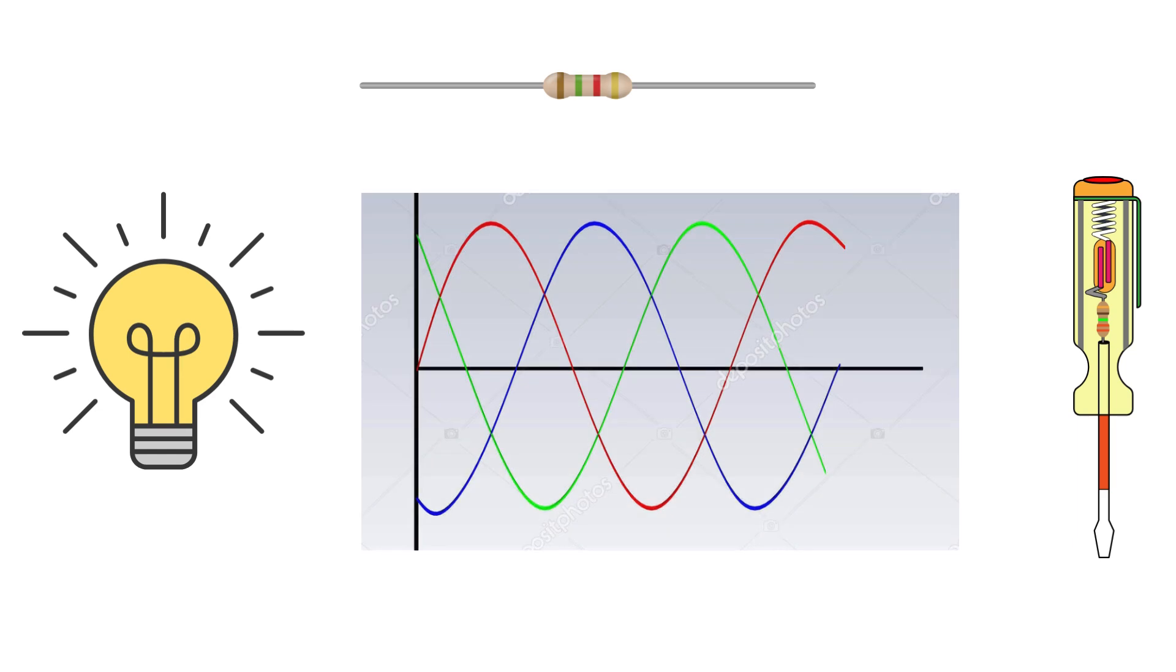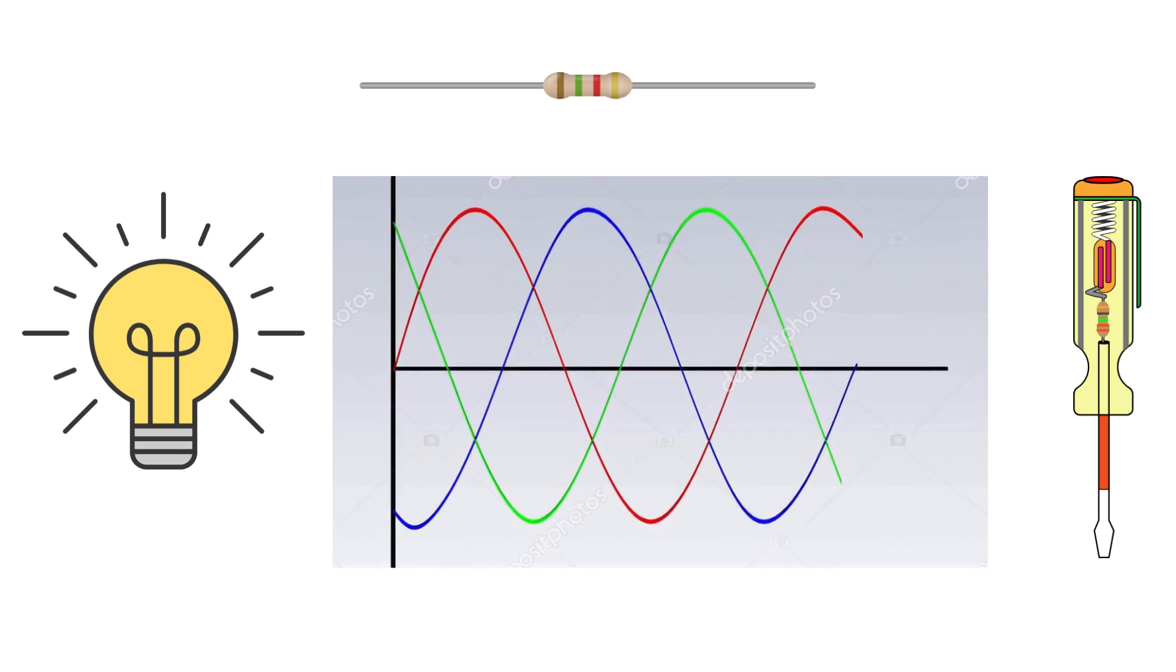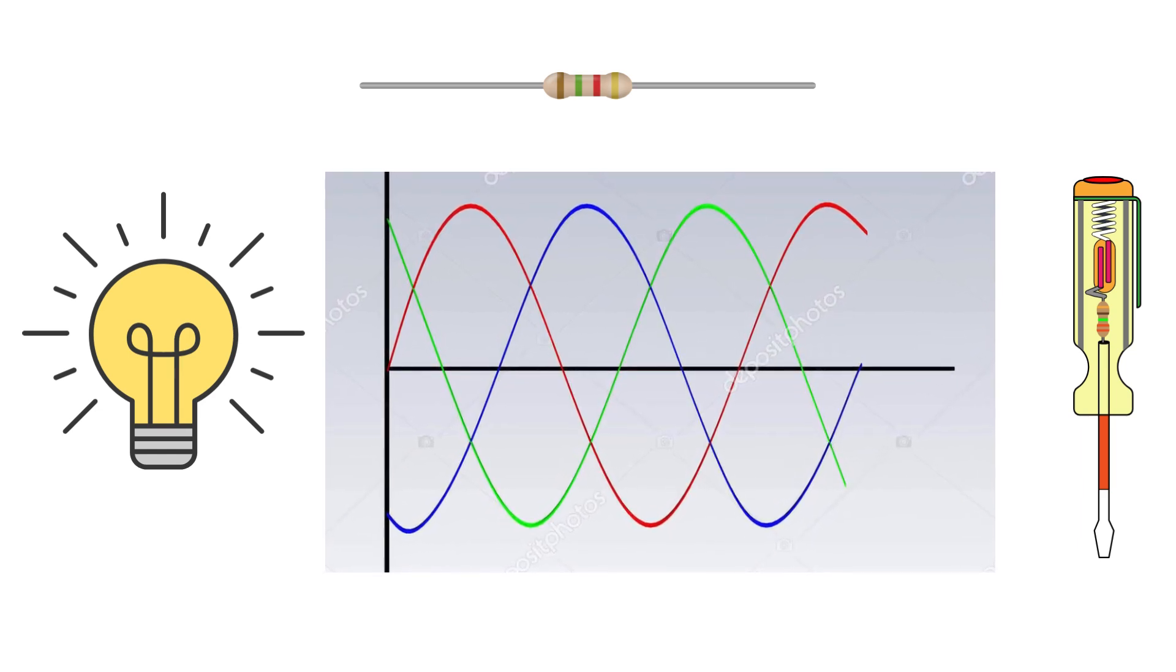In a three phase system, there are three separate waves of electricity, each offset by 120 degrees from the others.